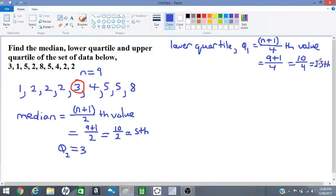The 2.5th value is between the second and third values, located here by this red line. We need to add these two numbers, circled in green, and divide by 2. So (2+2)/2 equals 2.